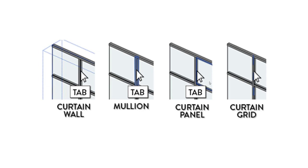A curtain wall has four primary elements: wall, panel, grid, and mullion. To edit them in Revit you must select them individually. You can use the Tab key to cycle through and select a specific part. When dotted lines appear you have selected the whole curtain wall; Tab cycles to the mullion, then a panel, and a dashed line shows a selected grid line.